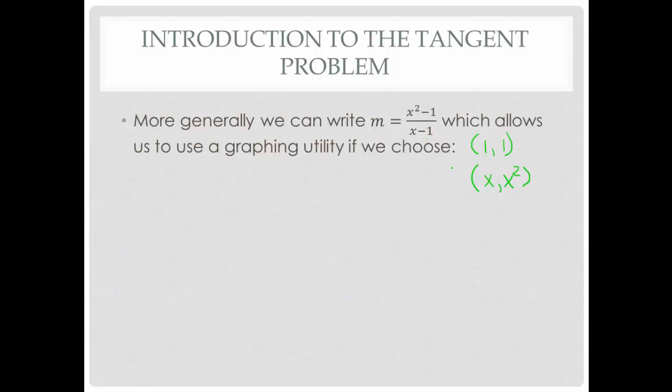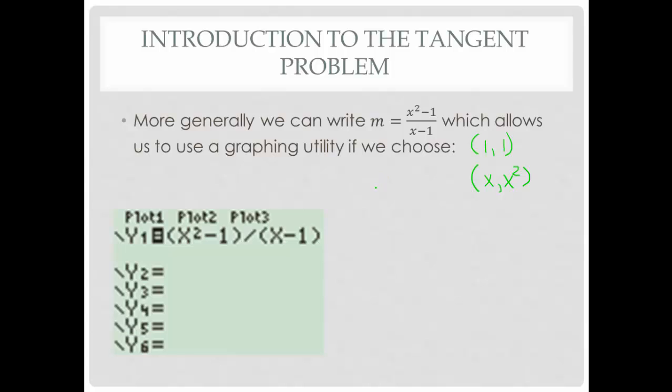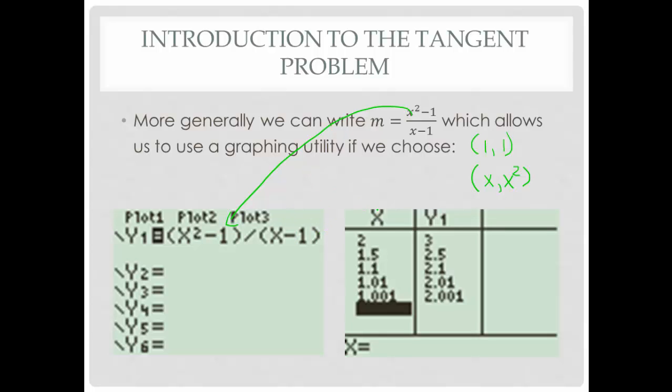This is going to allow us to use a graphing utility if we choose. This can speed up some of your calculations. This is a screenshot of a TI-83 Plus. You have to be very careful about where you put in the parentheses. This is my slope: (x² - 1)/(x - 1). When I create a table for that, because it's in my calculator, this is listed as an xy table. This is not an xy table—it's an xm table. This is my x value; this is the slope of the secant line associated with that specific x value.